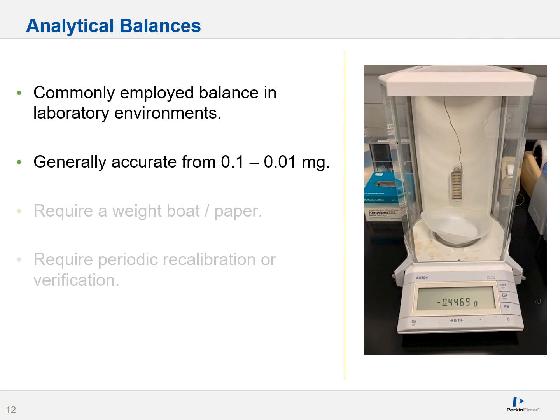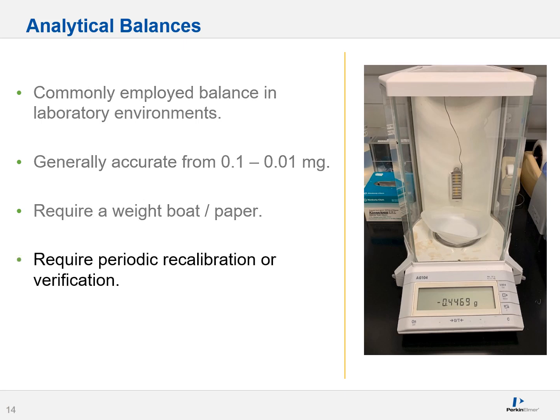You may also encounter analytical balances, which are commonly employed in most lab environments and are generally accurate from about 0.1 to 0.01 milligrams depending upon the model. They do require a weigh boat or paper — you wouldn't simply weigh a solvent or material directly onto the balance, as that would damage it. Depending upon the environment, they may also require periodic recalibration or verification.